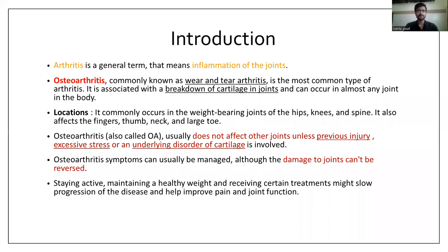First, we will see what is arthritis. Arthritis is nothing but inflammation of the joint, and osteoarthritis is commonly known as wear and tear arthritis. It is the most common type of arthritis and is associated with breakdown of cartilage in the joints. The preferred locations are mainly the weight-bearing joints such as hips, knee, and spine. It also affects the fingers, thumb, and neck. Other joints can also be affected but require a predisposing condition such as previous injury, excessive stress, or an underlying disorder of cartilage.